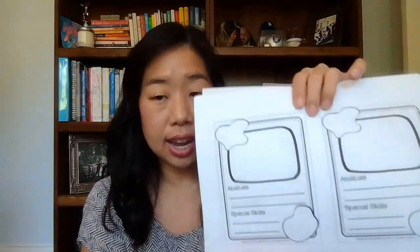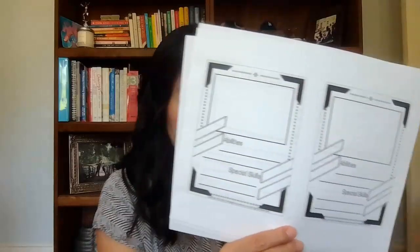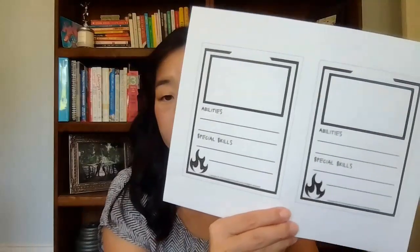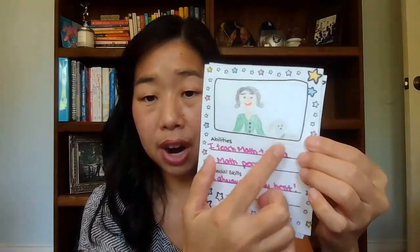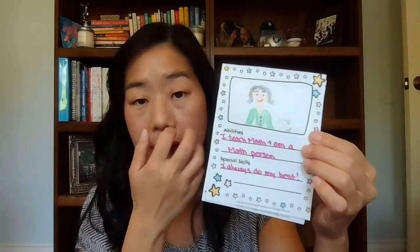The next activity I like to do on the first day of school is what I call character cards. When you receive this resource, it comes printed out two on a page. It comes with several templates — there's one with flowers and swirls, one that's more modern, one with stars, and one with a flame. I picked the border with stars. I draw a picture of myself and my sweet pup Fred, write an ability — I teach math and I'm a math person — and a special skill: 'I always do my best.' Notice I've colored it, and I don't have my name on it.